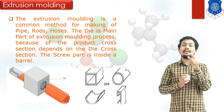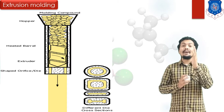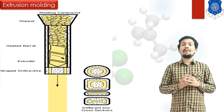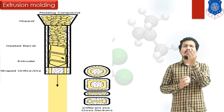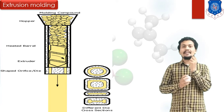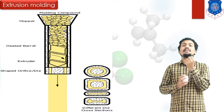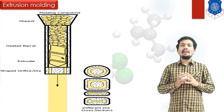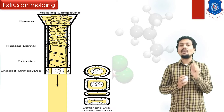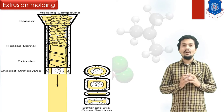In Extrusion Molding, you can easily make various shapes. We have plastic raw material available in the form of plastic spheres, balls, or pellets. With the application of heat, we convert this raw material into molten plastic. By passing this molten plastic through a die or opening, we can make components — for example, circular pipes, rectangular cross-section pipes, or any geometric plastic pipe.